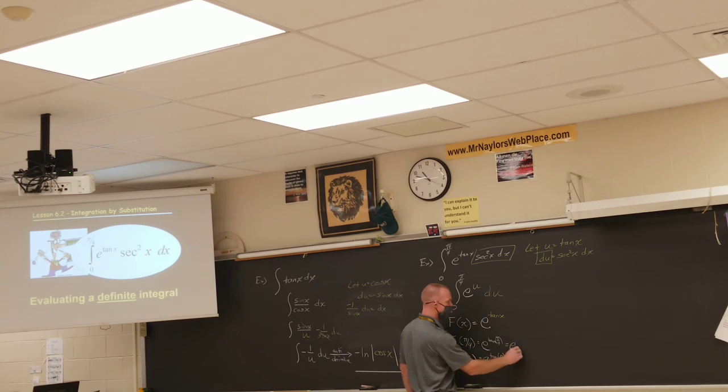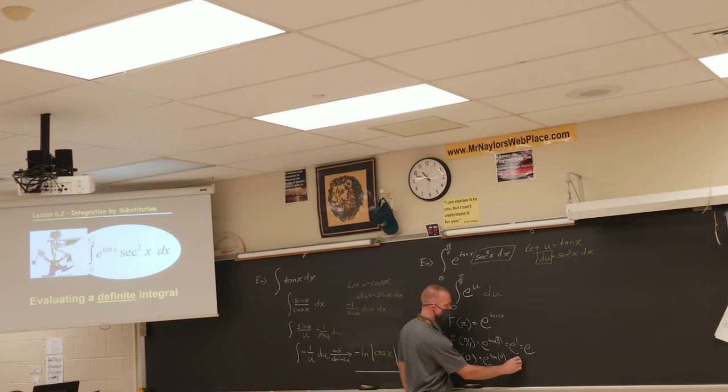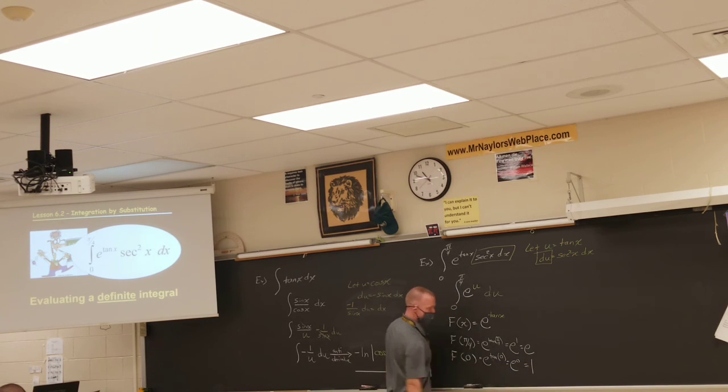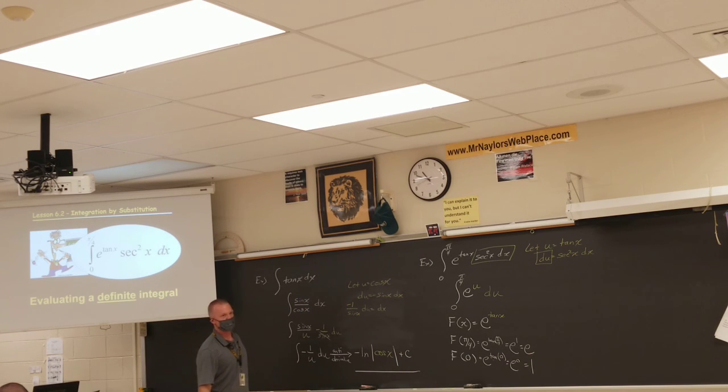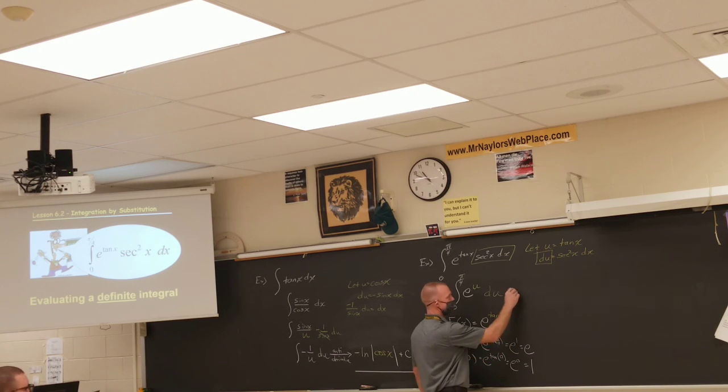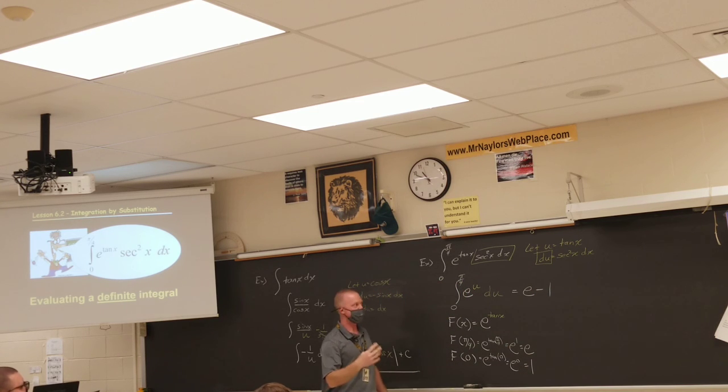Don't be scared to tinker around on a calculator. Tangent of 0 is 0, but that's E to the 0, which is not 0. E to the 0, of course, is 1. So F of B minus F of A is E minus 1. E minus 1, kind of being a little loosey-goosey with the equal signs here, but essentially, the answer to the integral is E minus 1.